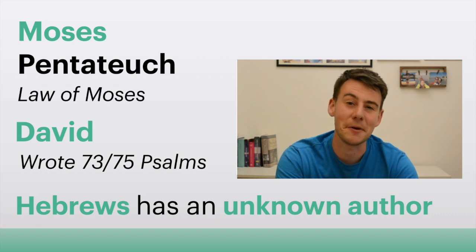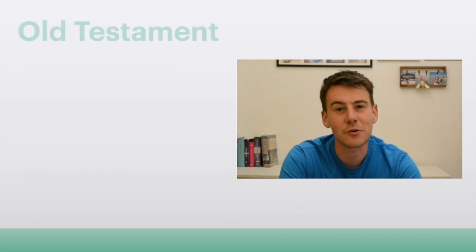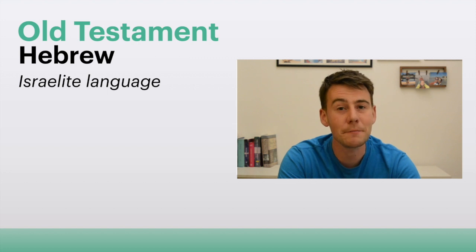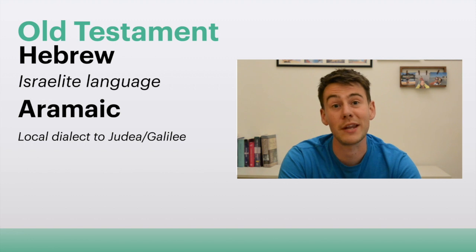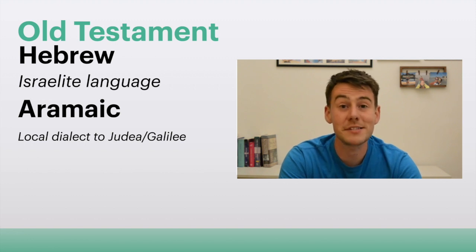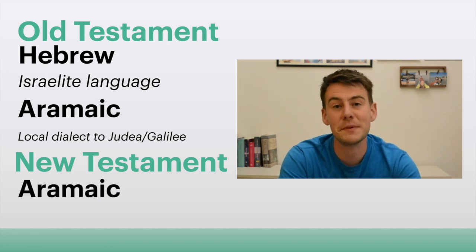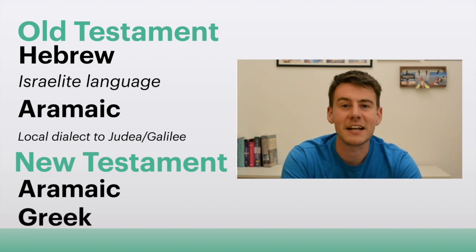The Bible was written in three original languages. In the Old Testament it was written predominantly in ancient Hebrew — the language of the Israelite people — as well as Aramaic, a local language that Jesus spoke on earth. The New Testament also contains Aramaic, but is written predominantly in Greek. So when the writers correspond with each other — for example Paul writing to Timothy — they're writing in Greek.